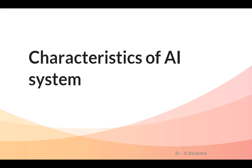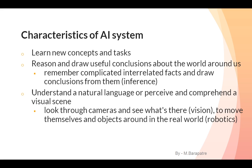Characteristics of AI systems include: learning new concepts and tasks, reasoning and drawing useful conclusions about the world around us. Just as humans can draw conclusions, we have to program machines to draw conclusions and make reasoning. This involves deciding facts and rules and programming machines so they can draw conclusions. Machines should also understand natural language and perceive and comprehend visual scenes.